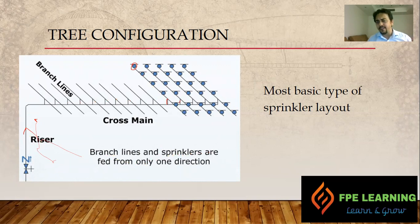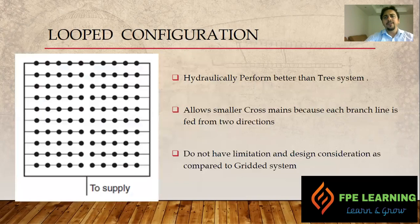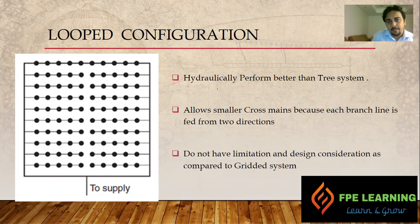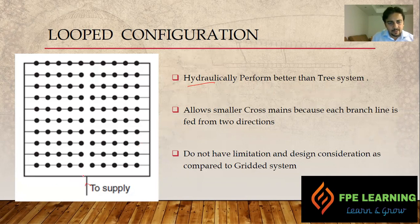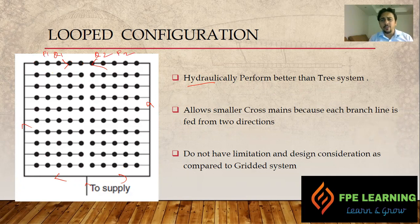The next one is the looped configuration. With the looped configuration, we have a hydraulic advantage compared to the tree system. You can see this is our supply line — the water is going all the way from two sides. If this is the most hydraulically remote area, the water is going from both sides: flow Q1 from one side and flow Q2 from the other, and at the junction we have some combined pressure.